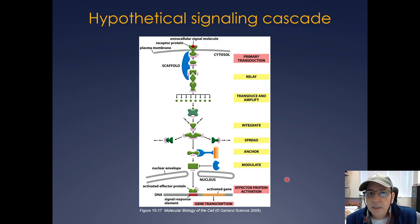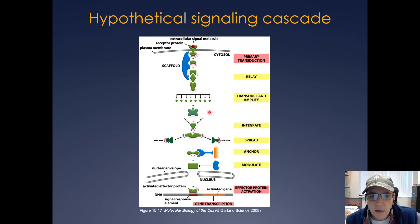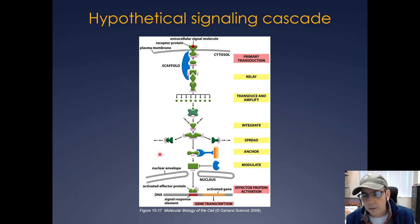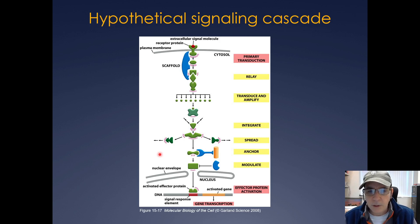Here's a hypothetical signaling cascade. A signaling molecule binds to a receptor protein; then scaffold proteins, kinases, or small G-proteins relay the signal. Transduction and amplification occur, signals are integrated and can spread to other cascades. Anchor proteins hold proteins in place, and modulators can shape the response. Ultimately you get an activated effector protein leading to changes in gene expression, or changes in protein activity that can alter the cytoskeleton, changing cell shape and other properties.